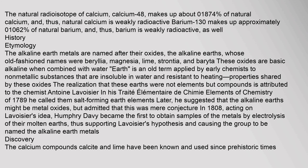The alkaline earth metals are named after their oxides — the alkaline earths — whose old-fashioned names were beryllia, magnesia, lime, strontia, and barita. These oxides are basic (alkaline) when combined with water. 'Earth' is an old term applied by early chemists to non-metallic substances insoluble in water and resistant to heating. Antoine Lavoisier, in his 1789 Elements of Chemistry, called them 'salt-forming earth elements' and later suggested the alkaline earths might be metal oxides. In 1808, Humphrey Davy became the first to obtain samples of the metals by electrolysis of their molten earths.